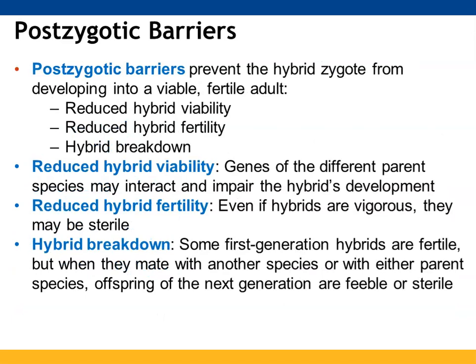With postzygotic barriers, fertilization was successful, but the zygote that forms — the hybrid — is not able to successfully develop into a viable fertile adult. Reduced hybrid viability means the genes of the parent species do not interact successfully, preventing the hybrid from developing properly, so it will likely be weaker. Reduced hybrid fertility means that even if the hybrids are strong — such as with a mule — they are unable to reproduce. Hybrid breakdown means the initial hybrids may be fertile, but when they mate and produce offspring, those offspring are sterile or pretty weak.